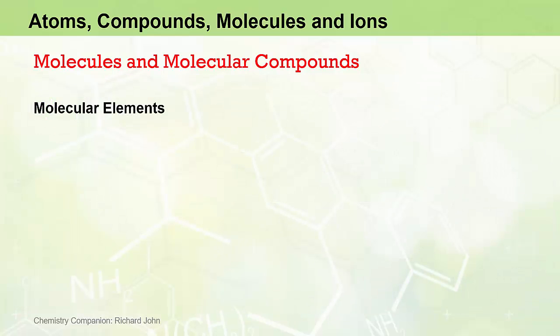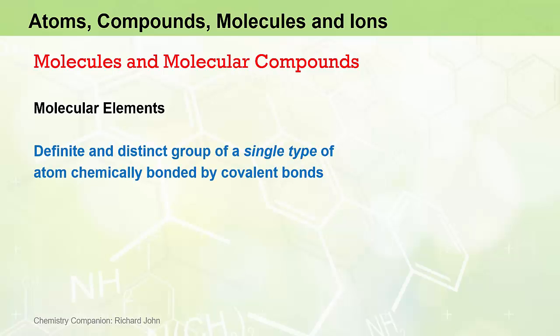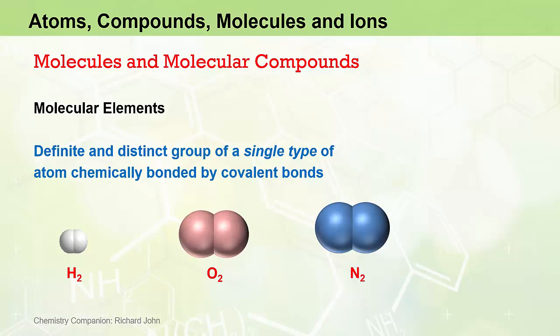So far, all of the examples we have used for molecules have been molecular compounds, but molecular elements also exist. Remember, an element is comprised of only one type of atom, and so molecular elements can be said to be a definite and distinct group of a single type of atom chemically bonded by covalent bonds. Examples we need to know about include molecular hydrogen H2, the oxygen molecule O2, and the nitrogen molecule N2. These are probably the three most important molecular elements that we deal with.